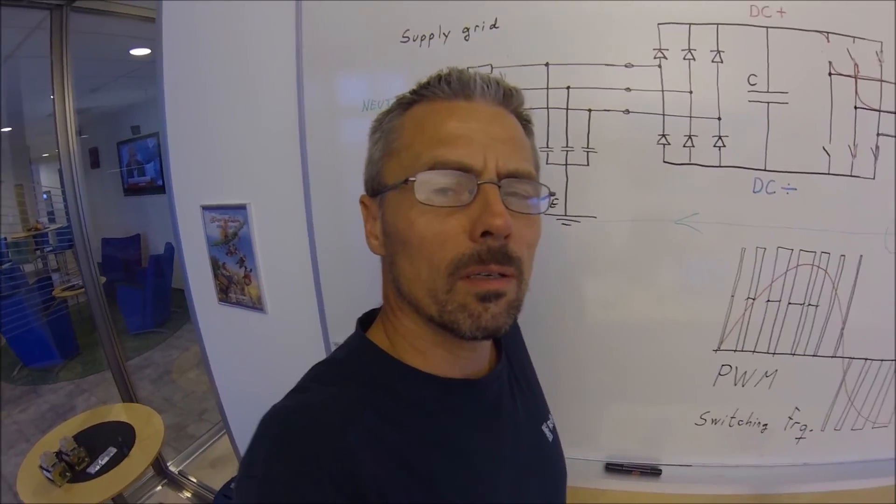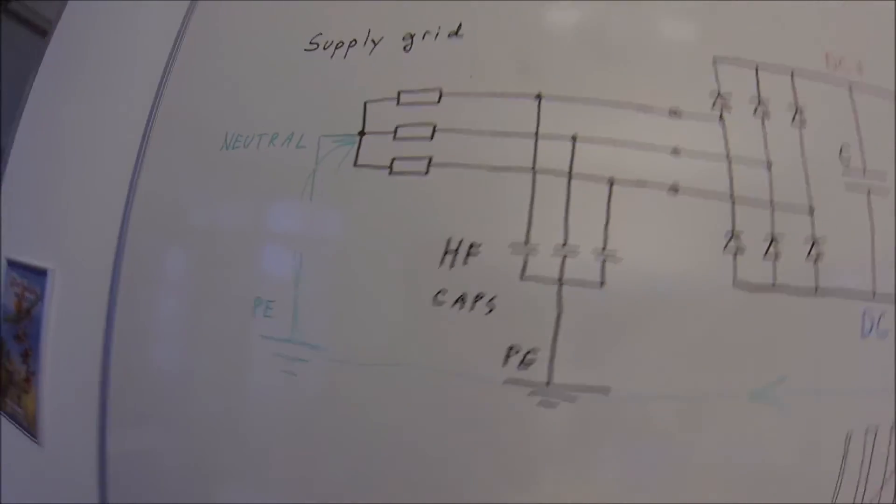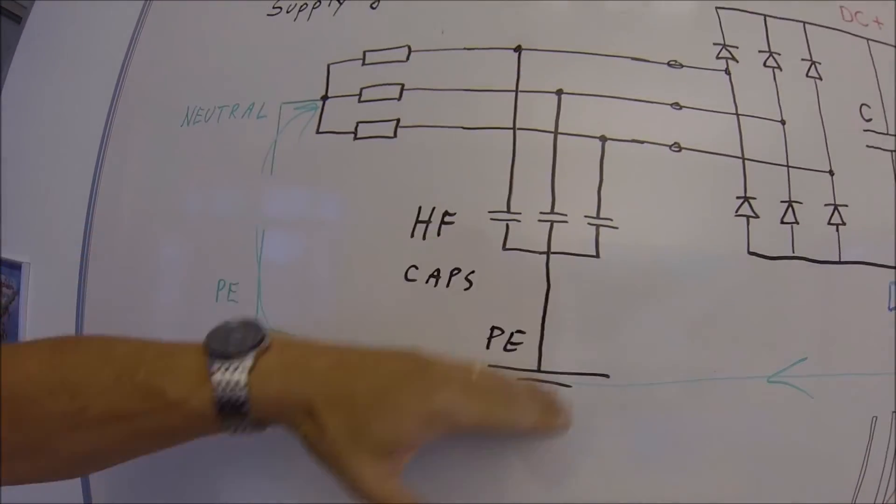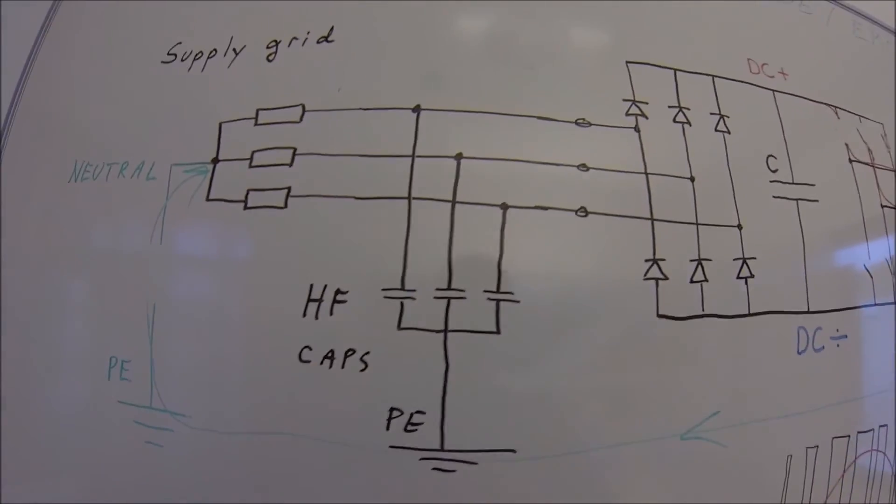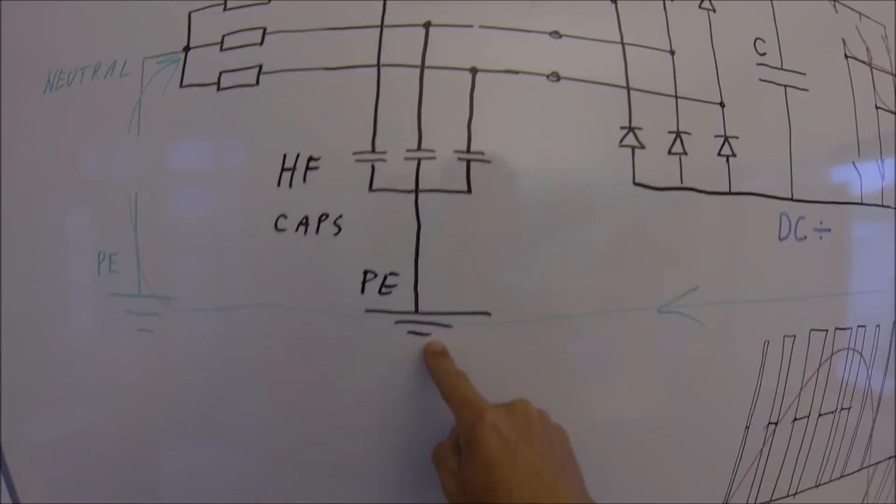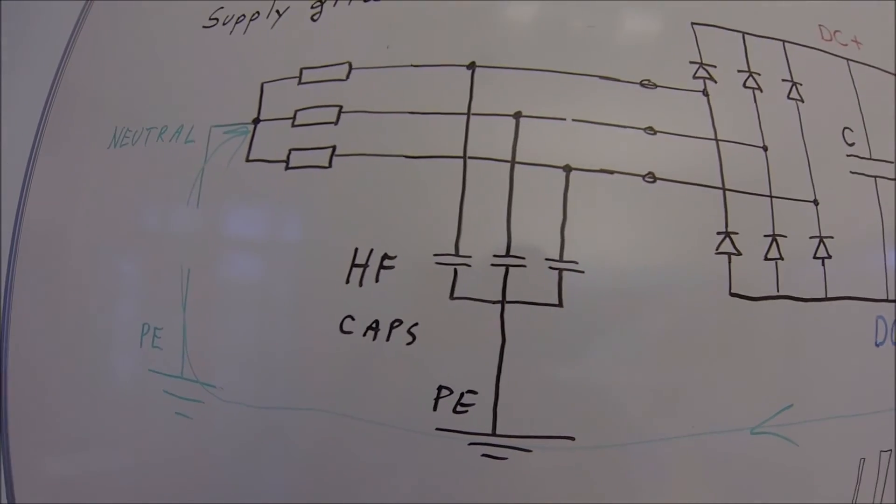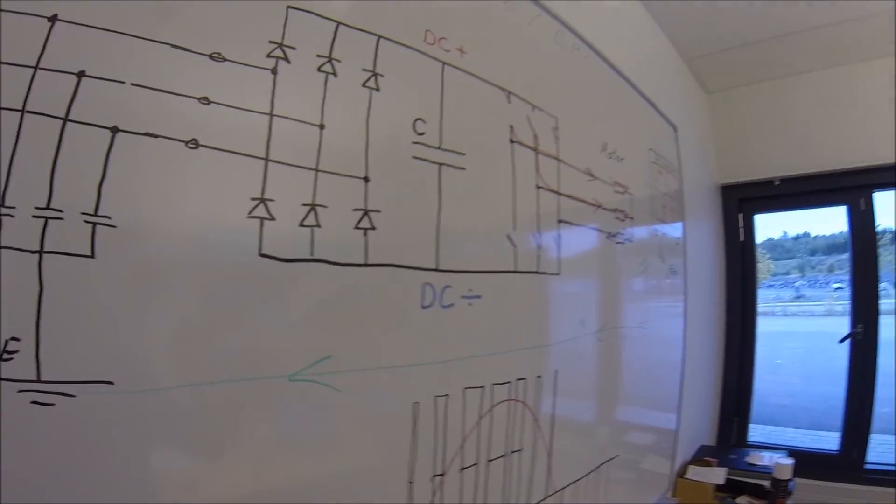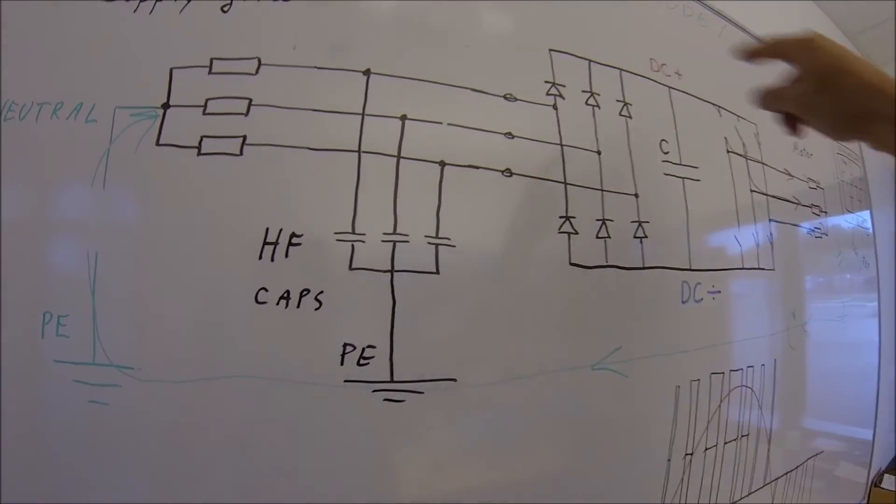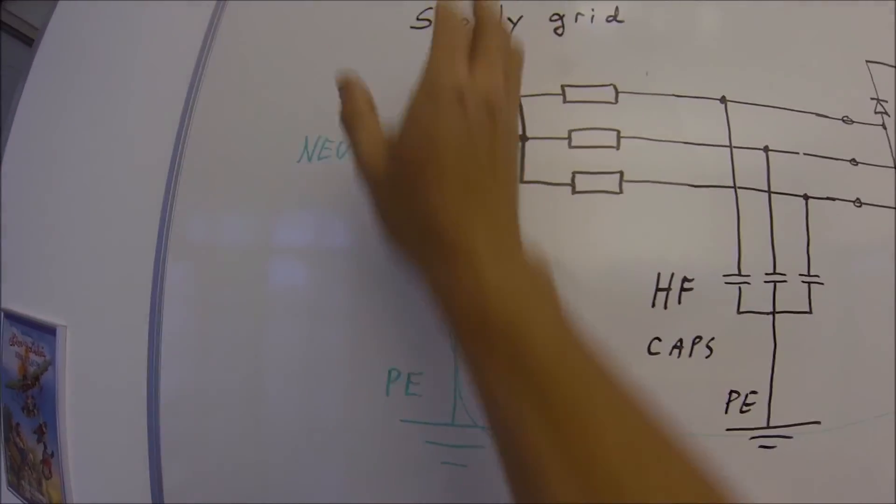One other thing that can be done to protect the supply grid from common mode is to utilize a high frequency capacitor filter. And what it actually does, it looks at the balance between the three phases and anchor them to the protective earth. So any unbalance here will leak through the protective earth here. So basically you create the circulating current inside this system and you avoid to have the common mode distributed to your grid.